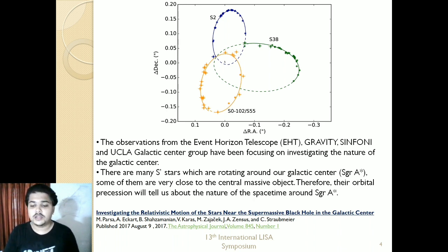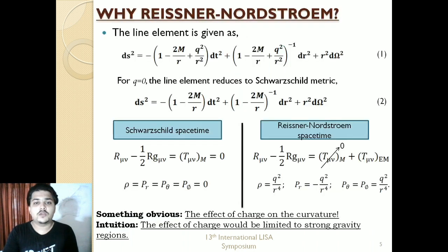Moving on, we have the Reissner-Nordström spacetime. Just like the Schwarzschild spacetime, this is a vacuum solution of the Einstein field equation. It is time-independent and spherically symmetric. The difference here is that it has a Q term. It is obvious that this Q term is going to have some effect on the curvature, so to know that we will be looking at the energy momentum tensor.